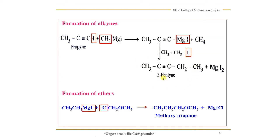So, it is 2-pentyne. This is an alkyne. Similarly, you can prepare any required alkyne by changing methyl magnesium iodide with the required group and by replacing propyne with some other alkyne.